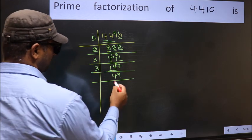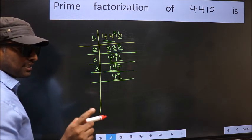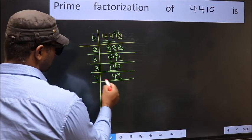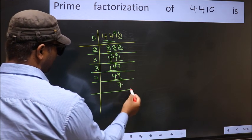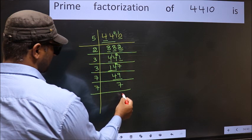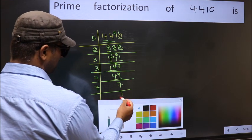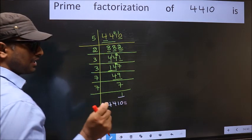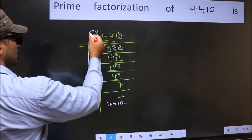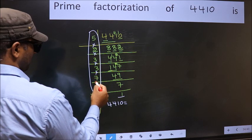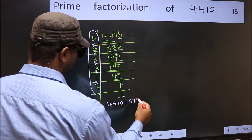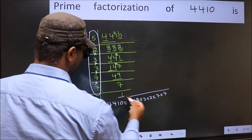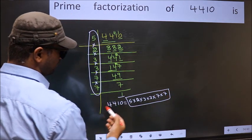49 divided by 7: 7×7=49. 7 is a prime number, so 7×1=7, giving us 1. So the prime factorization of 2410 is the product of these numbers: 5 × 2 × 3 × 3 × 3 × 7 × 7. This is the prime factorization of 2410.